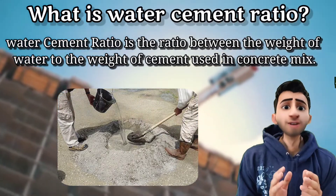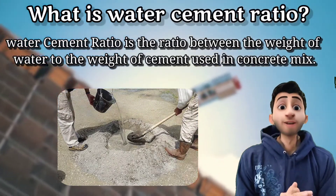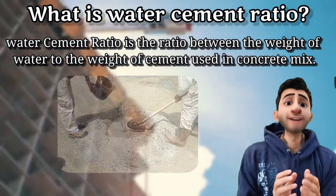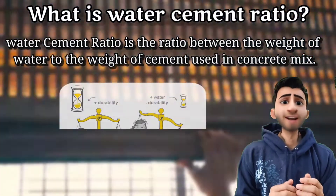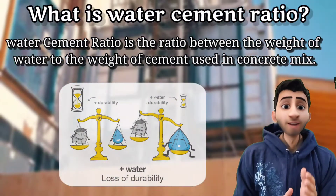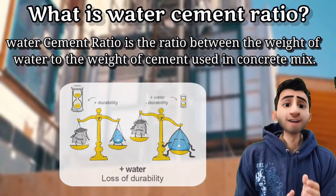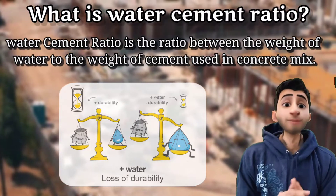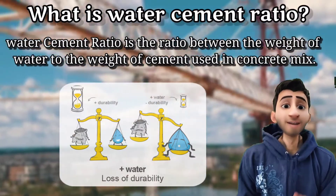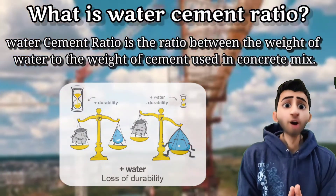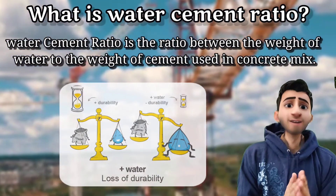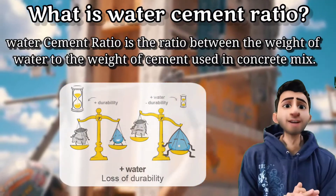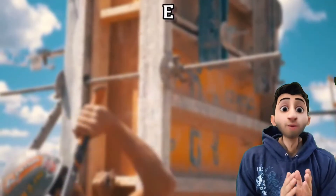We all know that water cement ratio will directly affect the strength of concrete. If we do not provide the correct water cement ratio, the strength will be decreased. But if we provide a good water cement ratio value to the concrete mix, it will give a high yield of strength.